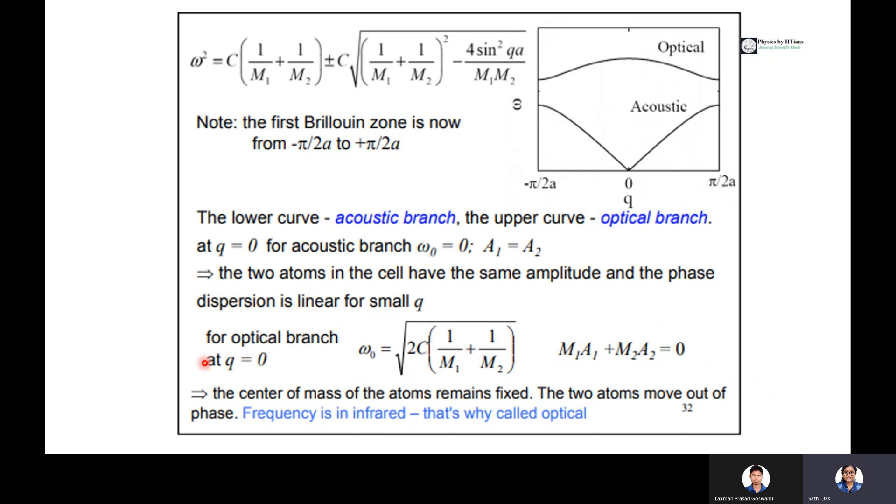For the optical branch when q equals 0, ω₀ will be √(2C(1/M1 + 1/M2)), or M1A1 + M2A2 equals 0. This means the center of mass of the atoms remains fixed and the two atoms move out of phase with each other because M1A1 equals minus M2A2.